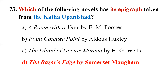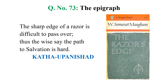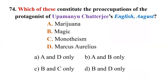An epigraph is a quote from another work placed at the beginning of a book. The Razor's Edge begins with this passage from the Katha Upanishad: 'The sharp edge of a razor is difficult to pass over; thus the wise say the path of salvation is hard.' The title is also taken from this passage. Whenever you read a novel, note its publication year, the era in which it was published, subtitle, major characters, important scenes, and any epigraph.